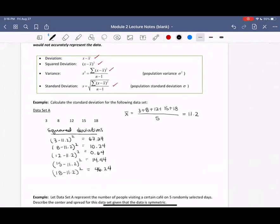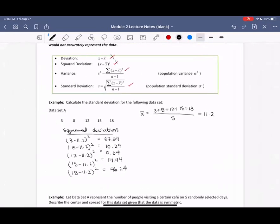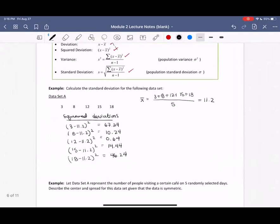What's our next step after we found the squared deviations? We need to add up all of these squared deviations and divide by n minus 1. That is, we need to compute the variance.